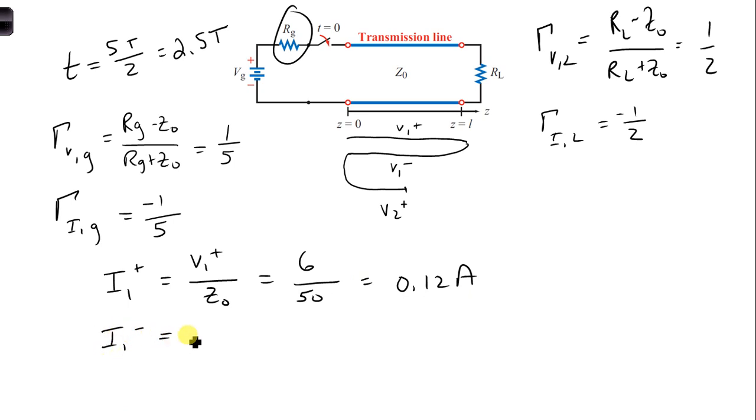Then for I1 minus, we take the current reflection coefficient at the load, and we multiply that times the value, the amplitude of the wave incident on the load, which is I1 plus. So at this point, I put V1 plus here, but what we're actually calculating here is I1 plus, so I could also put I1 minus. So what we have is the value of I1 plus. It's 6 volts, and at this point, we're going to multiply it by the reflection coefficient so that we can get this I1 minus value.